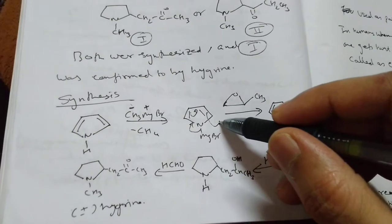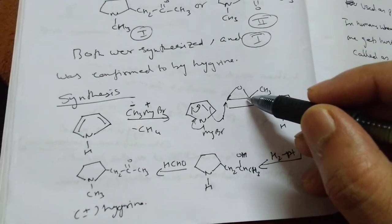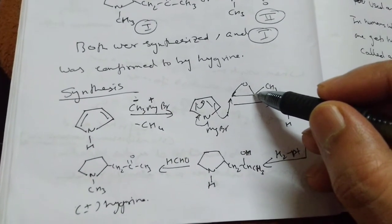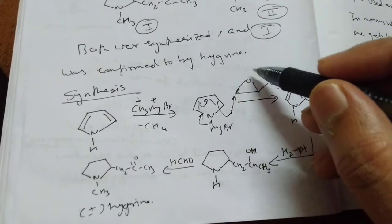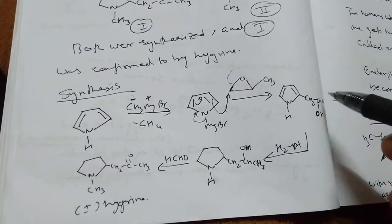It will attack the less hindered side. If it was having positive charge, then attack would have happened here because this will have more positive character, but because there is no positive charge, attack happens here on the less hindered side.